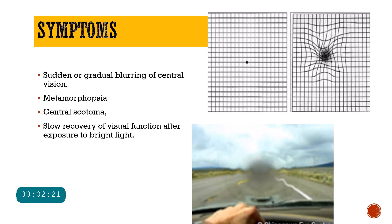Now what are the symptoms that a patient develops after development of a choroidal neovascular membrane? A choroidal neovascular membrane is usually associated with the macular area, and therefore the patient complains of a sudden or gradual blurring of the central vision. A sudden loss of central vision usually occurs when these choroidal neovascular membrane vessels suddenly bleed into the subretinal area or the intraretinal space, causing sudden blurring of the central vision.